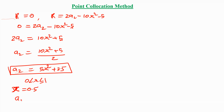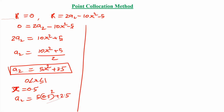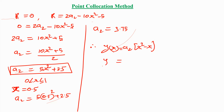Substituting x = 0.5 into the a₂ equation: a₂ = 5(0.5)² + 2.5 = 5(0.25) + 2.5 = 1.25 + 2.5 = 3.75. Therefore y(x) = a₂(x² − x) = 3.75(x² − x). This is the approximate trial function solution of the given differential equation.